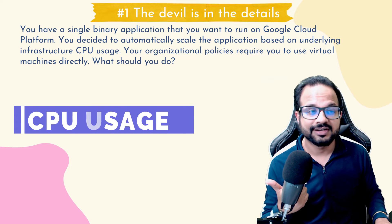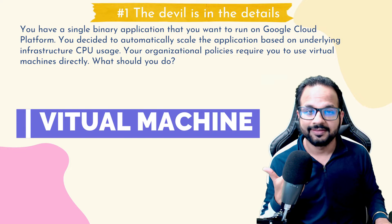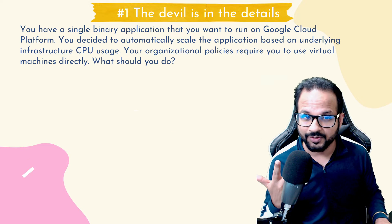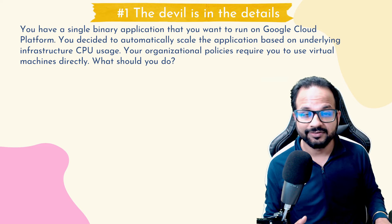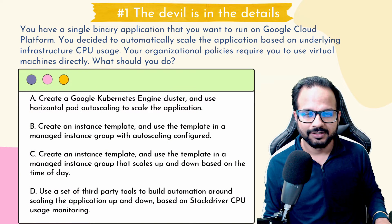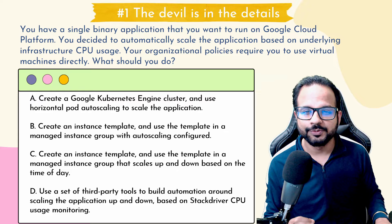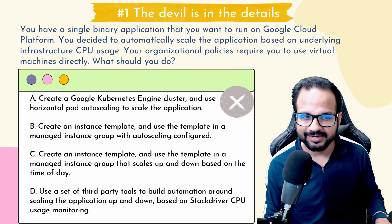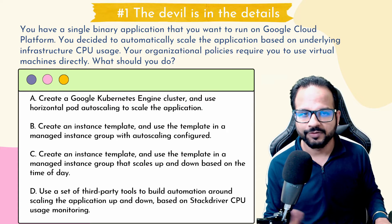That means it should support auto scaling based on CPU usage metrics. Your organization policies require you to use virtual machines directly — that is your third requirement. Let's have a look at each of the options and eliminate the ones that don't satisfy these requirements. So the first option says create a GKE cluster and use horizontal pod auto scaling. Since you have to use virtual machines directly, GKE would not be an ideal choice here — it would be an overkill.